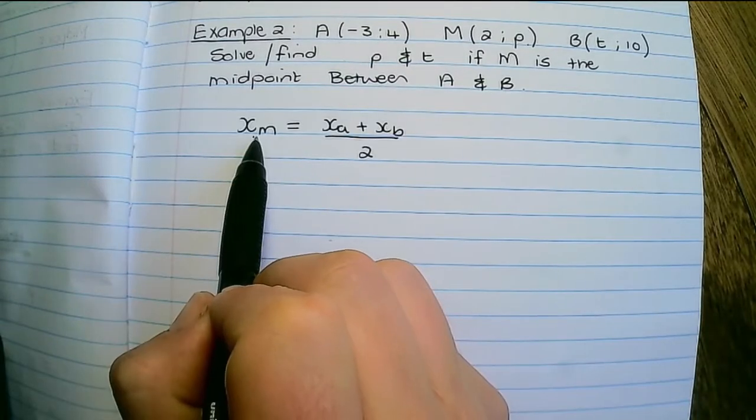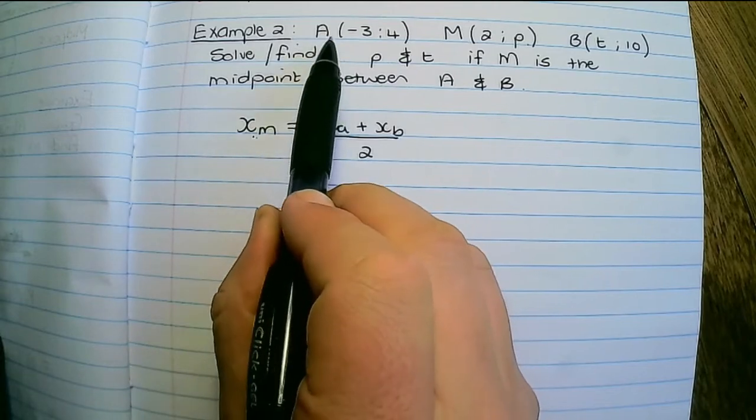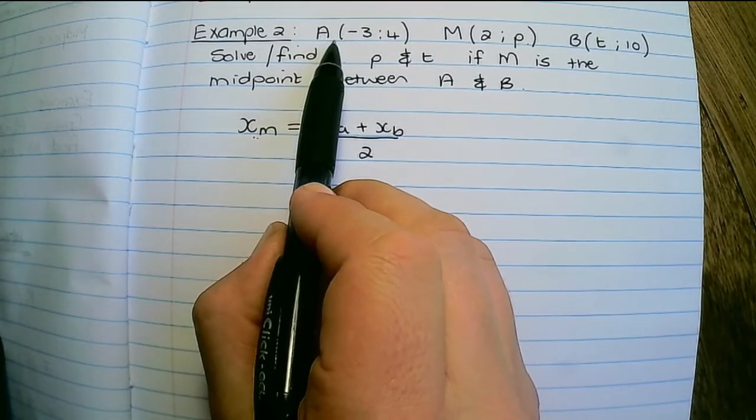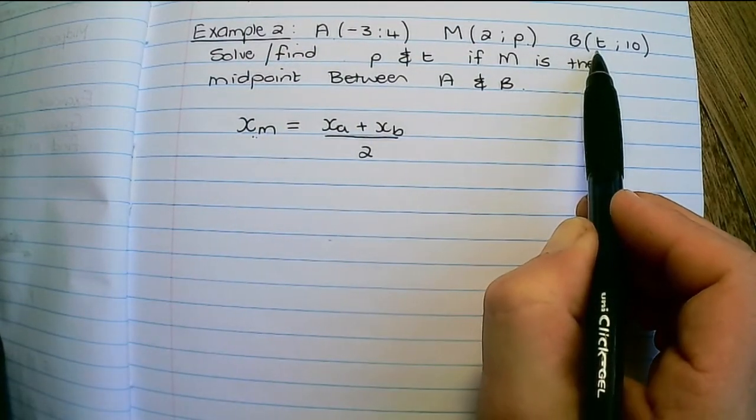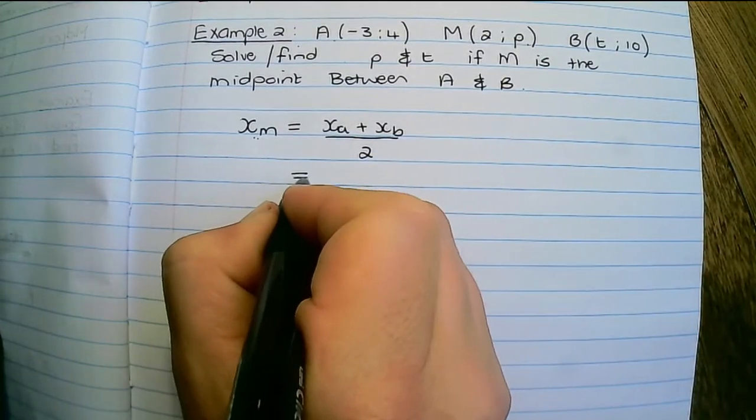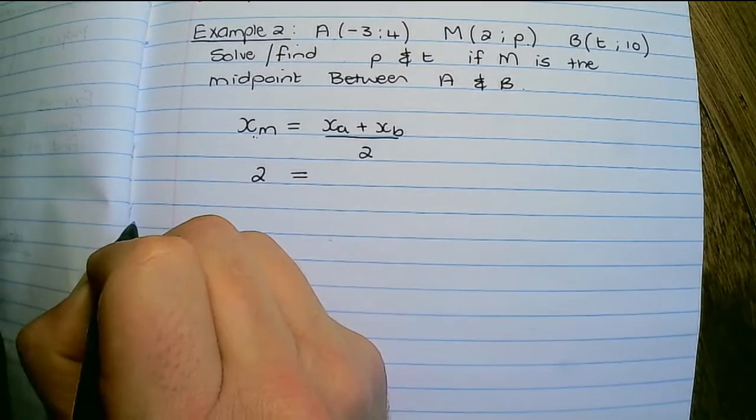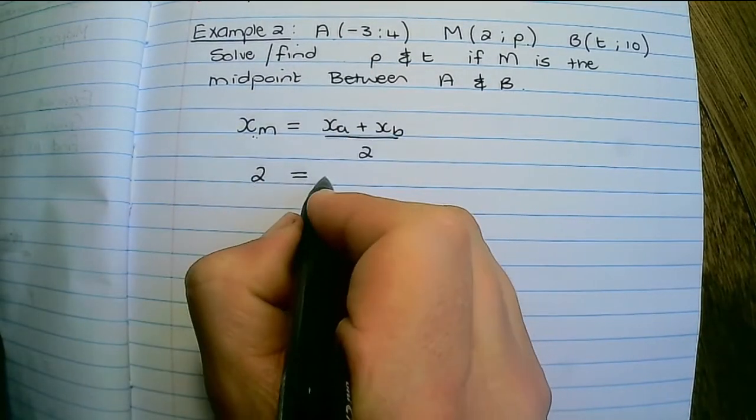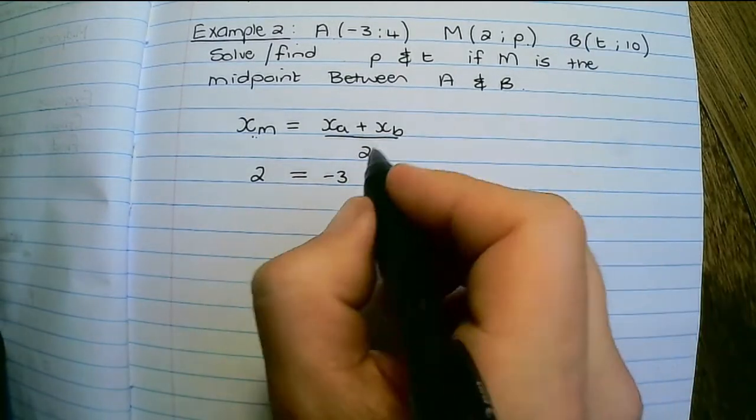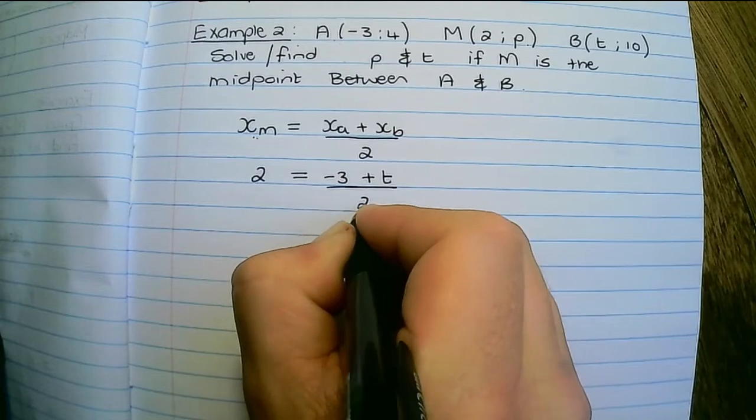So the x coordinate of M is equal to the x coordinate of A plus the x coordinate of B divided by two. Now if I substitute, the x coordinate of M is two, the x coordinate of A is negative three, and the x coordinate of B is T, and I divide that by two.